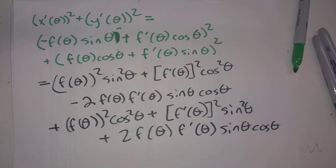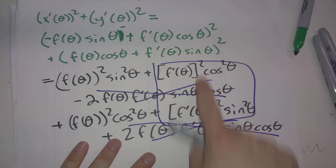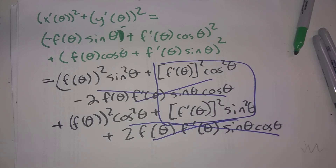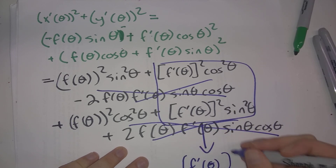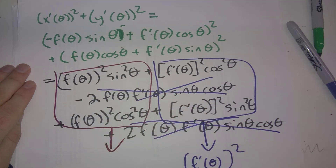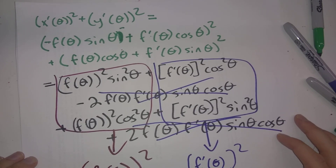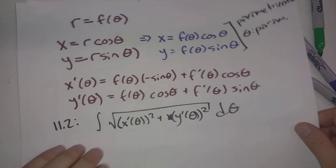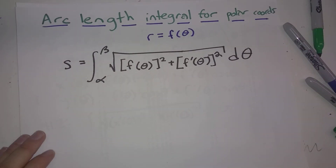This looks like a big mess, but we can simplify things. The cross terms cancel out. The f'(θ)² terms combine as f'(θ)²·(cos²θ + sin²θ) = f'(θ)². Similarly, the f(θ)² terms combine as f(θ)²·(sin²θ + cos²θ) = f(θ)². So x'(θ)² + y'(θ)² = f(θ)² + f'(θ)². Integrating the square root of that with appropriate bounds gives us our arc length integral.